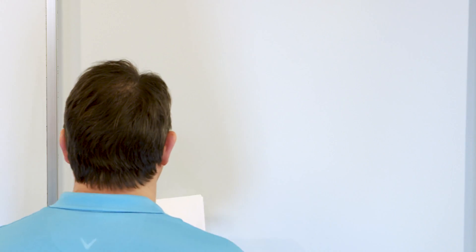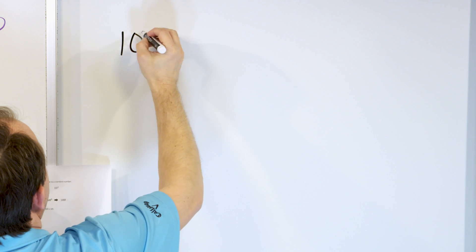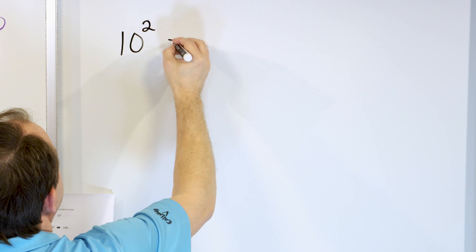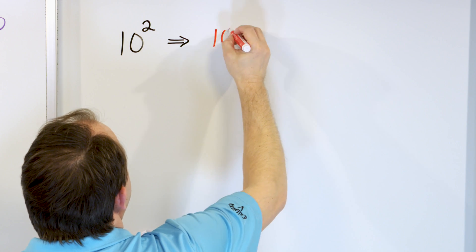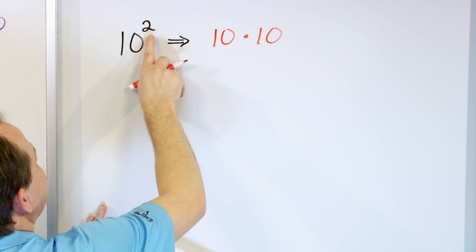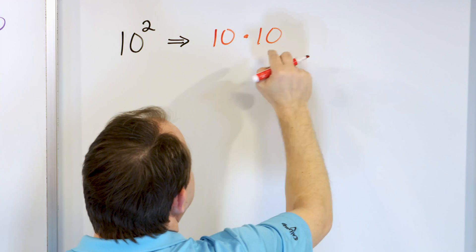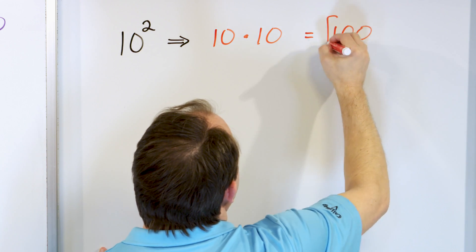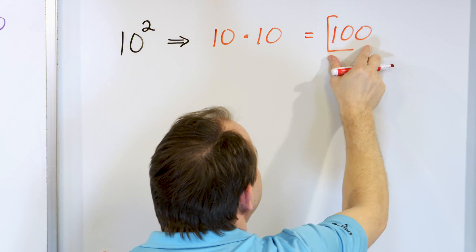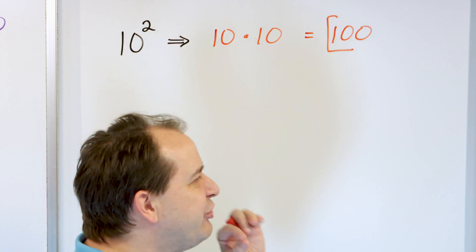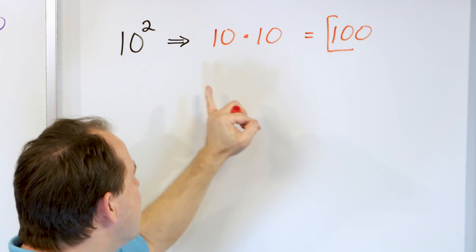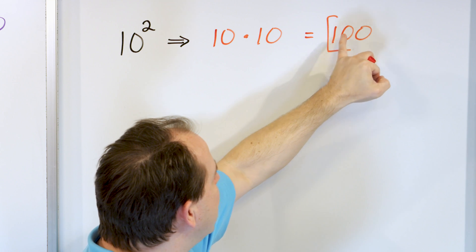Next problem: take ten to the power of two and write it as a standard number. What does ten to the power of two really mean? It means we have ten multiplied times itself — only two tens because the power is two. Ten times ten is one hundred. Notice it just means two zeros after the one, so you could skip straight to writing a one with two zeros at the end.